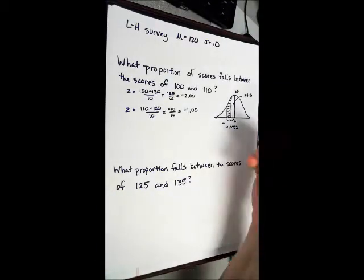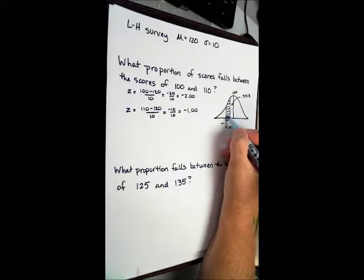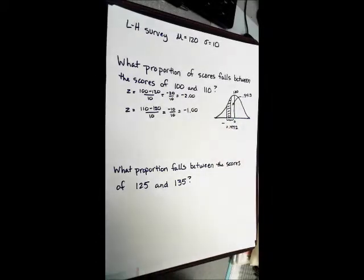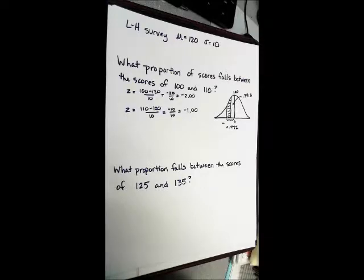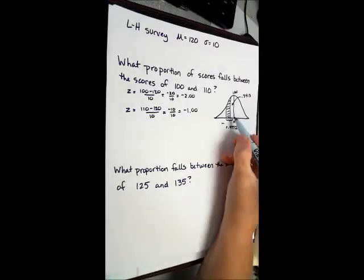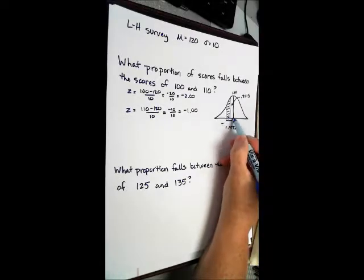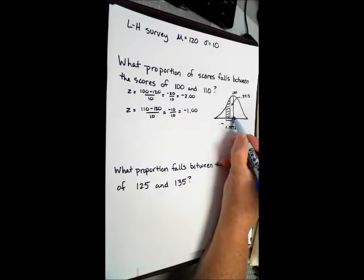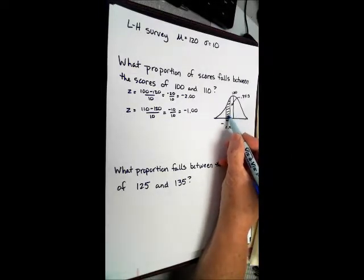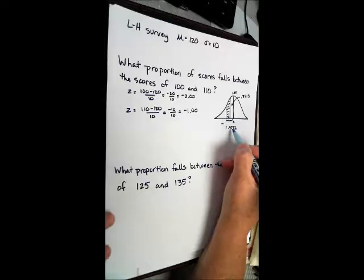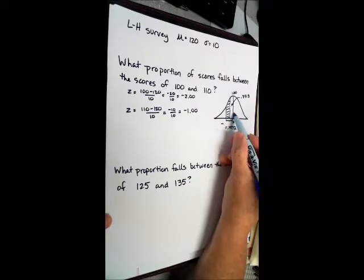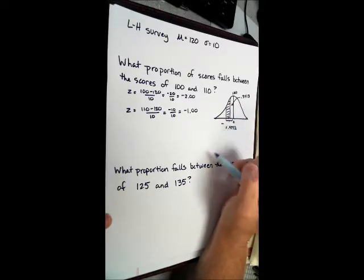So the proportion from here to here is 0.4772. So we have this, we have this. We can't add them together. That wouldn't make any sense. We can't just use this because we're double counting that area. So when you need something that's outside of the mean, you're probably going to have to do something like subtracting. If we only want this, and we have this, and we have this, we're going to subtract.